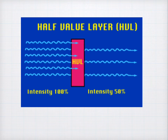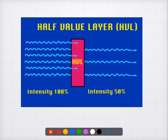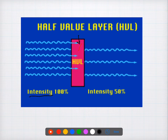Coming to question number one, it is about the half value layer. The half value layer is the thickness of a substance which will reduce the intensity by 50 percent. So the thickness of the substance which reduces the number of photons by half or 50 percent is called the half value layer. That's about the first question.